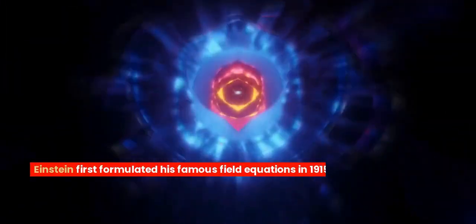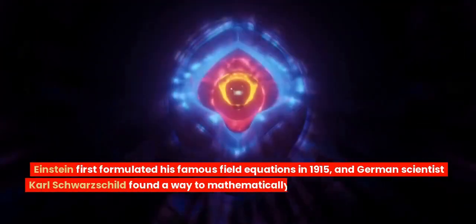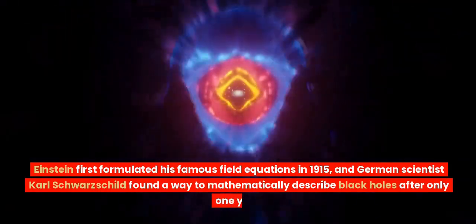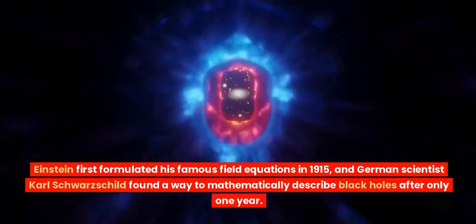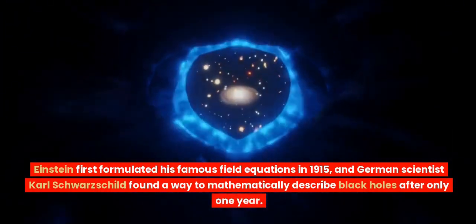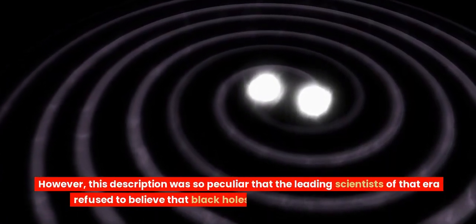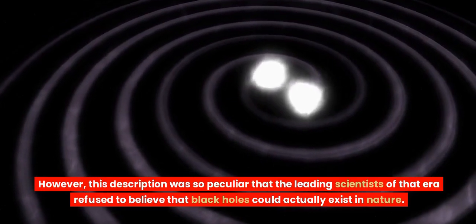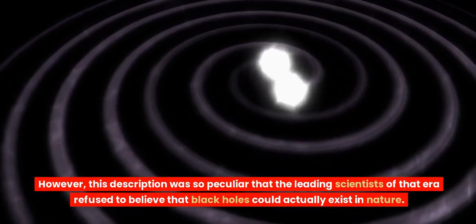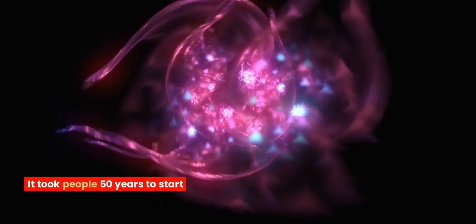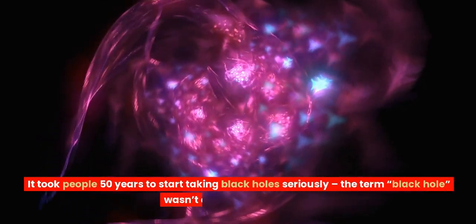Einstein first formulated his famous field equations in 1915. And German scientist Karl Schwarzschild found a way to mathematically describe black holes after only one year. However, this description was so peculiar that the leading scientists of that era refused to believe that black holes could actually exist in nature.